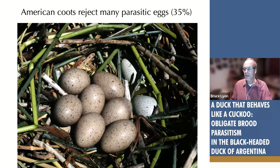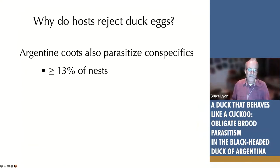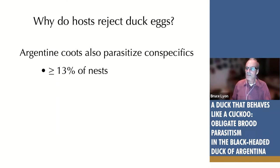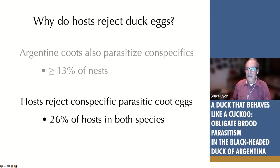A little digression to American coots: American coots lay eggs in each other's nests — a different form of brood parasitism. In my British Columbia population, 40% of nests receive eggs from a neighboring coot. Coots have evolved the ability to tell their own eggs from a neighbor's and will often kick out the parasitic eggs, burying them down in the nest so they won't be incubated and won't hatch. And it turns out something similar is happening in Argentina — the hosts of the black-headed duck do the same thing.